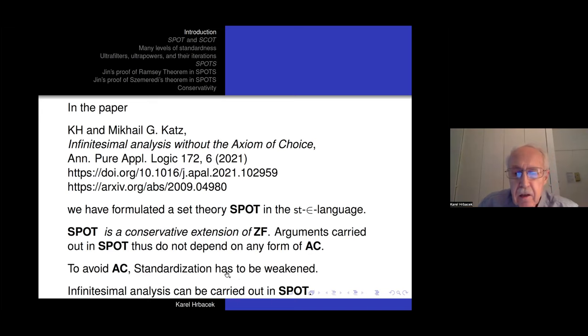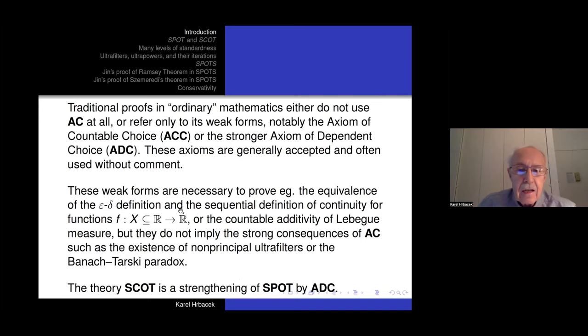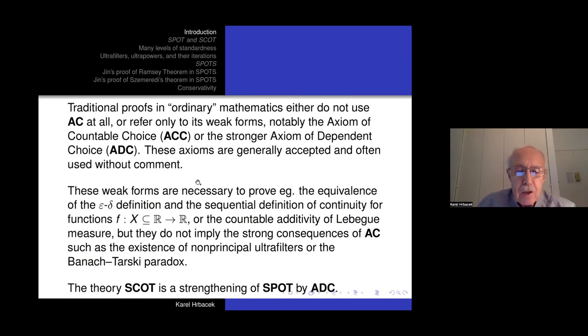In some proofs in ordinary mathematics, one uses the axiom of countable choice or the axiom of dependent choice — for example, in proving the equivalence of the epsilon-delta definition and the sequential definition of continuity, or the countable additivity of Lebesgue measure. These axioms, although forms of the axiom of choice, I call them weak forms — they are generally accepted and often used by working mathematicians without comment. So to take that into account, we also consider a stronger theory SCOTT, which is essentially SPOT plus the axiom of dependent choice.